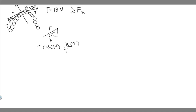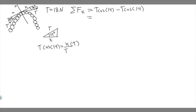Notice the two x components are in different directions, so one is going to be positive and one is going to be negative. Taking the sum of the forces — right is positive, left is negative — we have t·cos(14) minus t·cos(14), which equals zero. So the sum of the forces in the x direction is just zero; they cancel each other out, and we don't have to worry about the x direction.